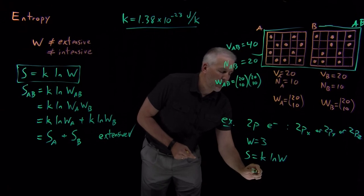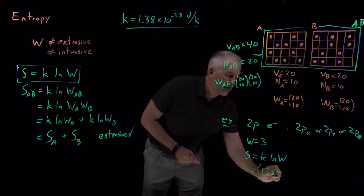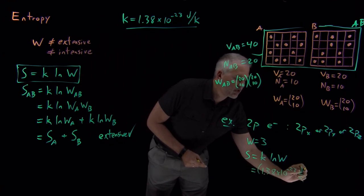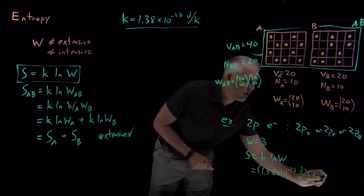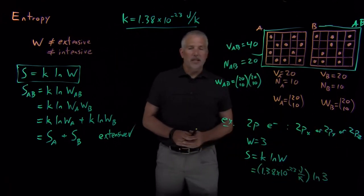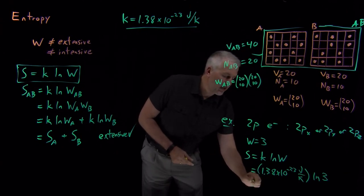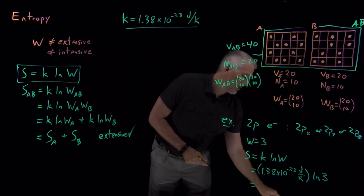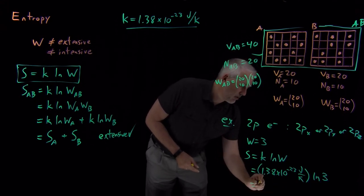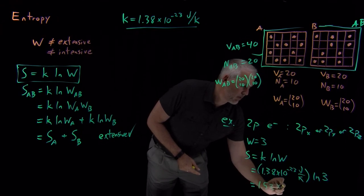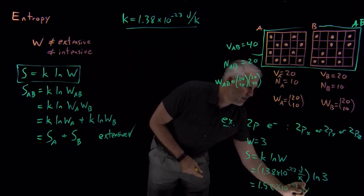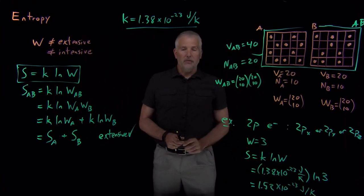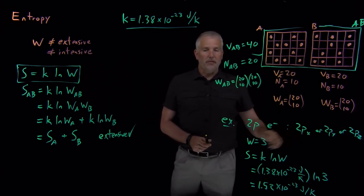But using that value, if we want to calculate a numerical value for the entropy, if we take Boltzmann's constant, 1.38 times 10 to the minus 23rd joules per kelvin, multiply that by the log of 3 for the multiplicity of the three states that this electron can occupy, then log of 3, our calculator tells us is 1.1. So this numerically works out to be 1.52 times 10 to the minus 23rd joules per kelvin as our answer.